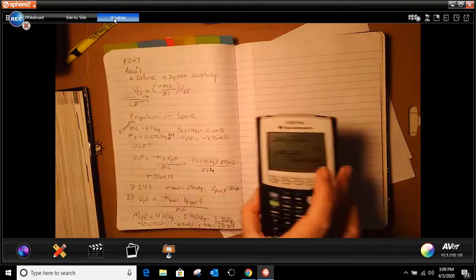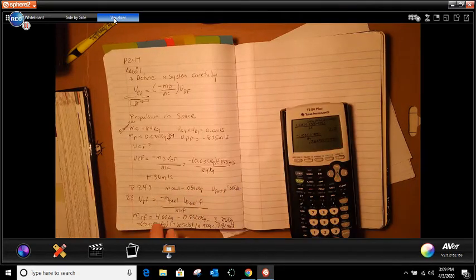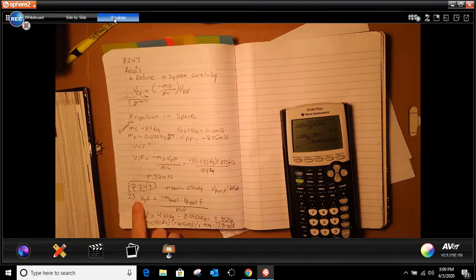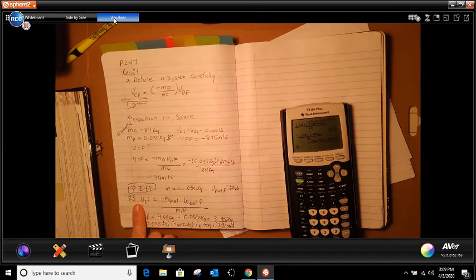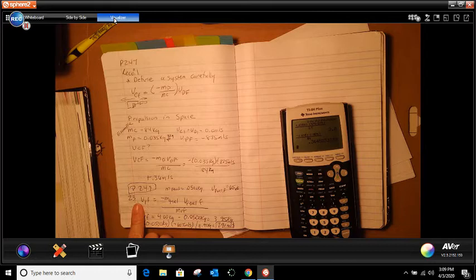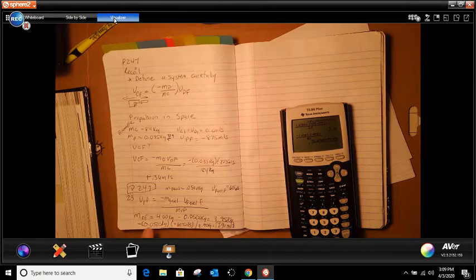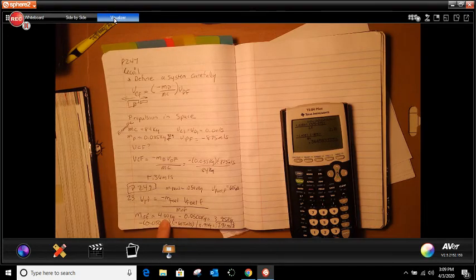And then the questions that we had to do on page 249 was just one of them, which was number 23. And so, 23 says that a 4.0 kilogram model rocket,